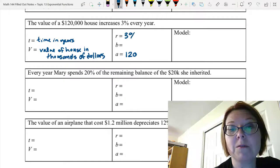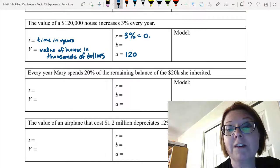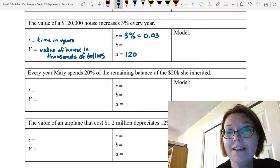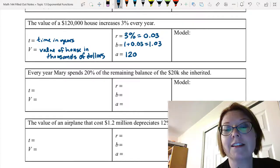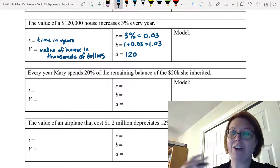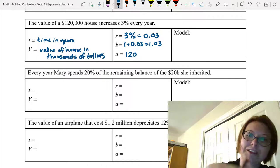So that's a positive 3% or a decimal value of 0.03. The B value is 1 plus the rate. So 1 plus 0.03. And that's 1.03. This means every year we have 103% of the year before.